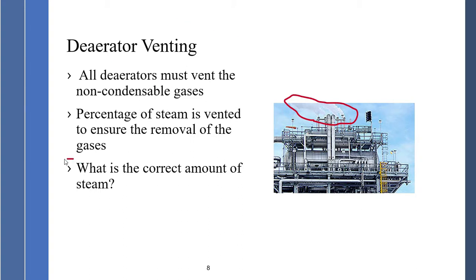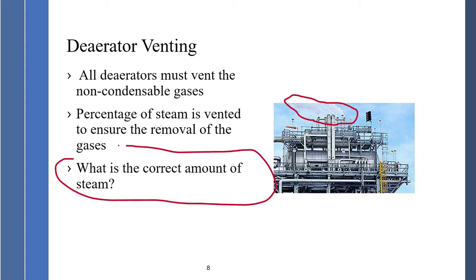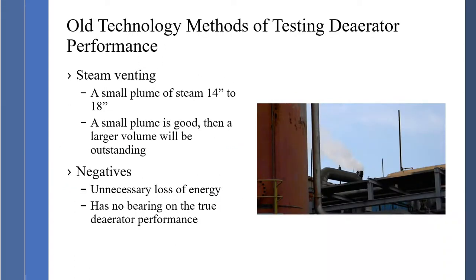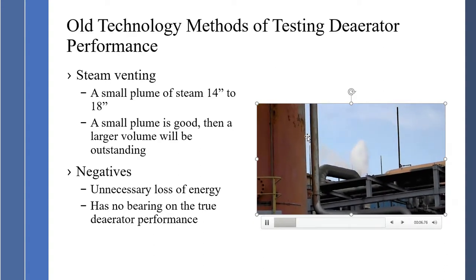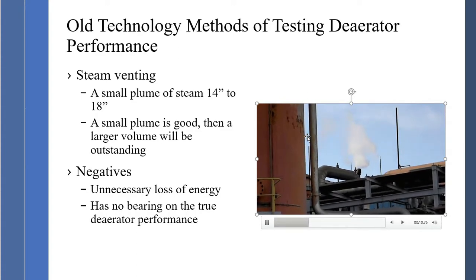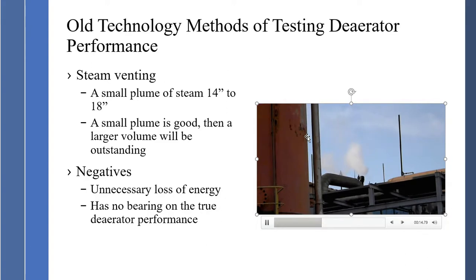The major question is: what is the correct amount of steam? How much steam should I be venting to ensure I am getting rid of the non-condensable gases? The old technology method of testing is steam venting — a small plume of steam, 14 to 18 inches. A small plume is good, a larger volume is outstanding, correct? Negative — it is an unnecessary loss of energy and has no bearing on true deaerator performance. It just says I am venting steam. You can see steam coming out of the deaerator operation here, but we don't know if this is the correct amount unless we measure dissolved oxygen.